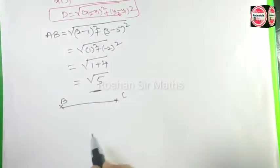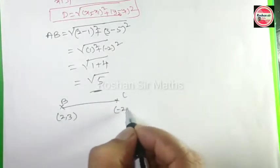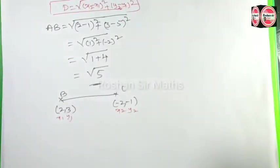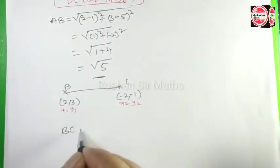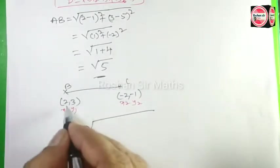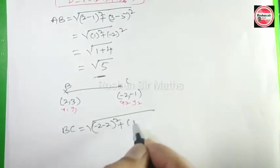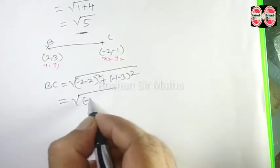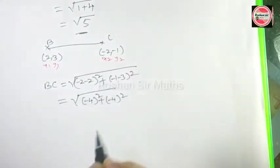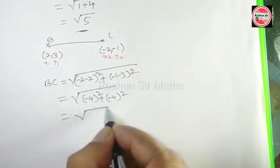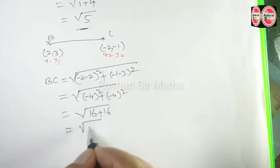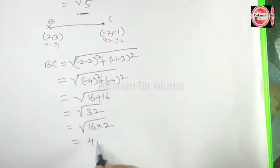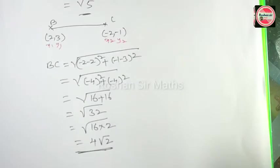For BC, B = (2,3) and C = (-2,-1). BC = √[(x2 - x1)²+(y2 - y1)²] = √[(-2-2)² + (-1-3)²]. This gives us the distance BC.